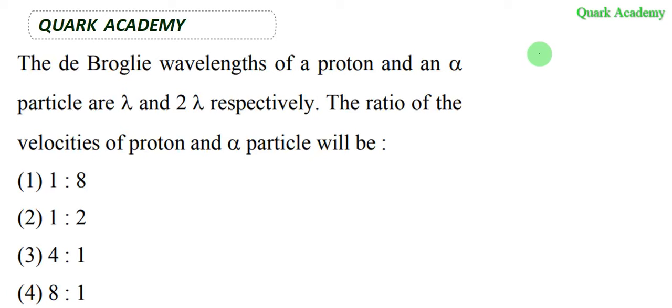In this question, the de Broglie wavelength of a proton and alpha particle are given. We need to find their velocities. The de Broglie wavelength of the proton is λ and for the alpha particle it is 2λ.